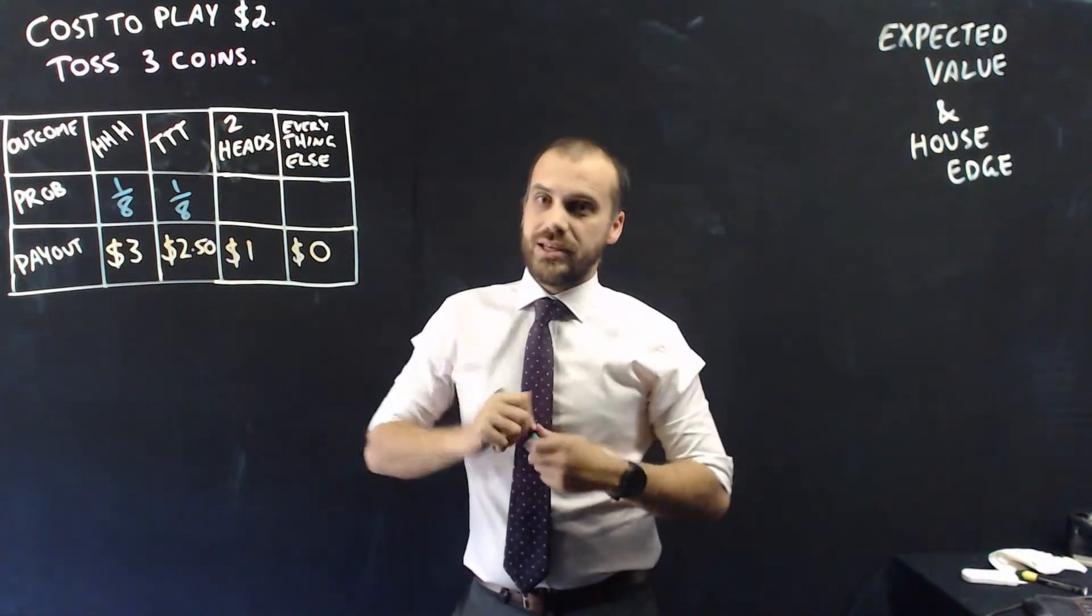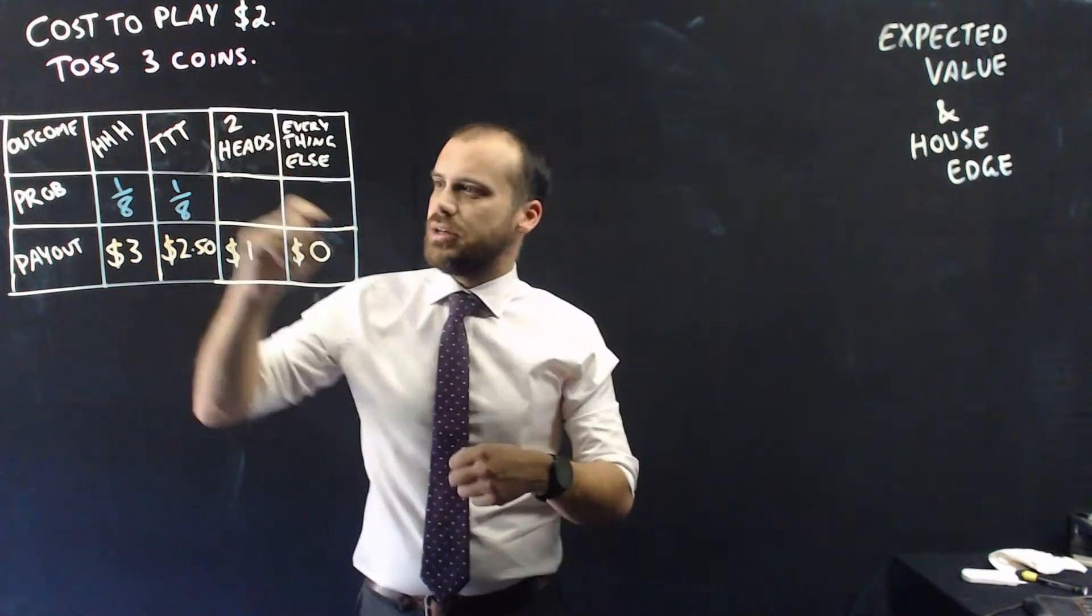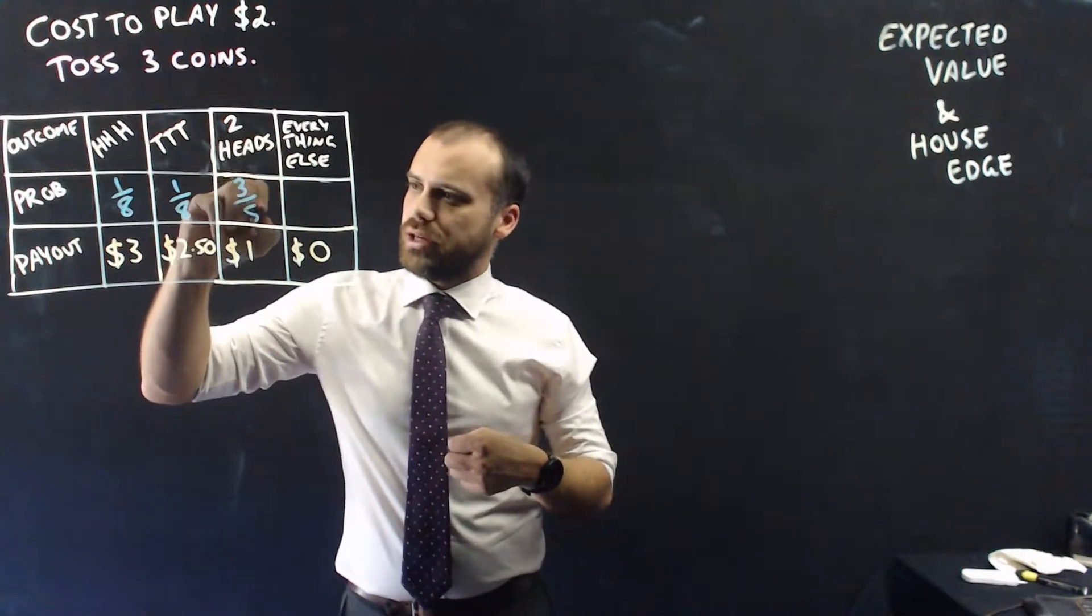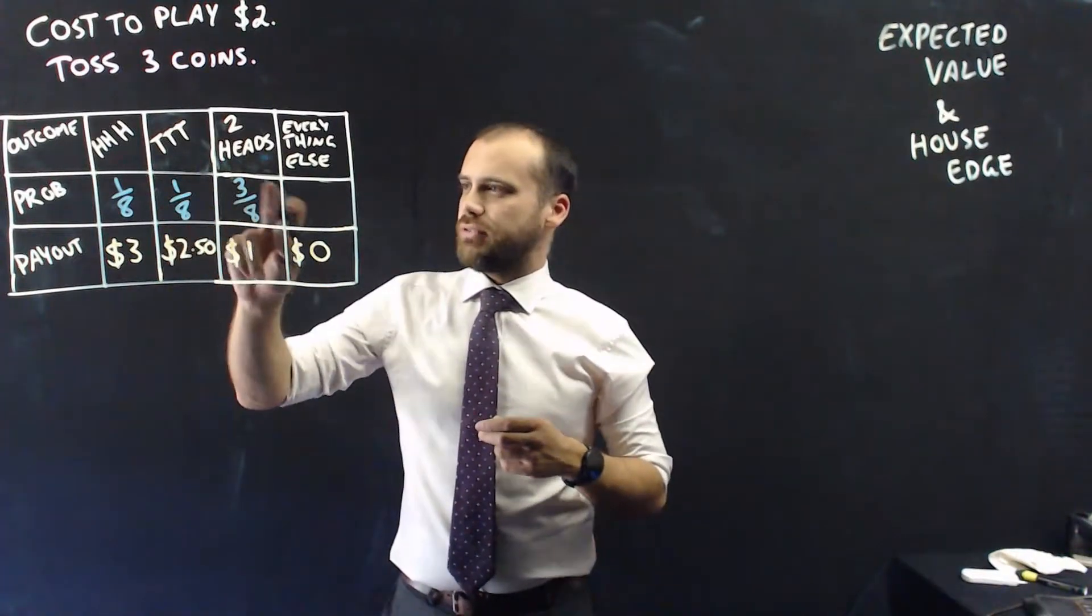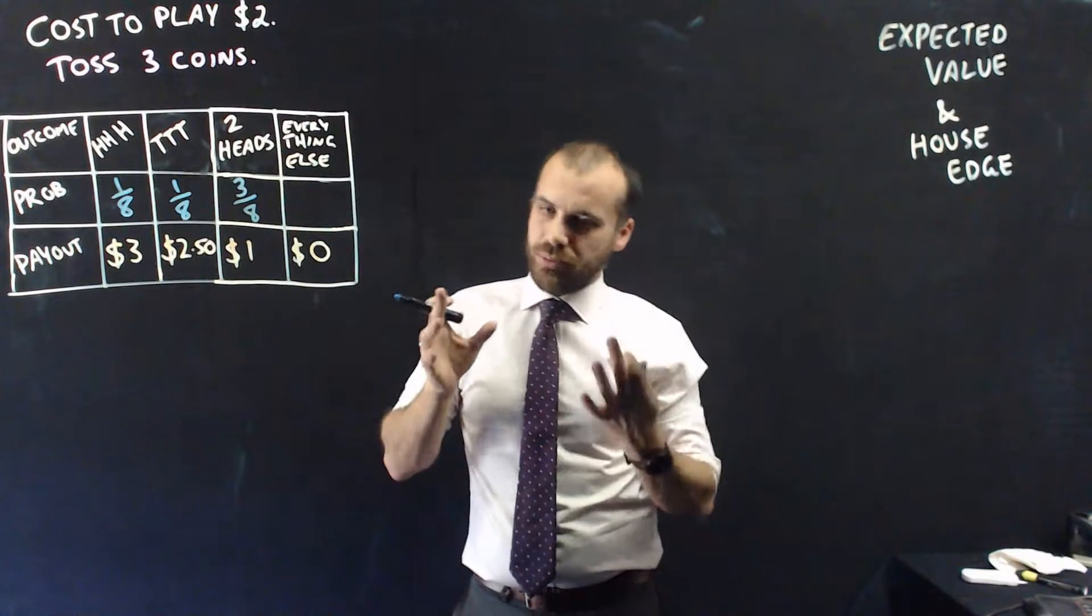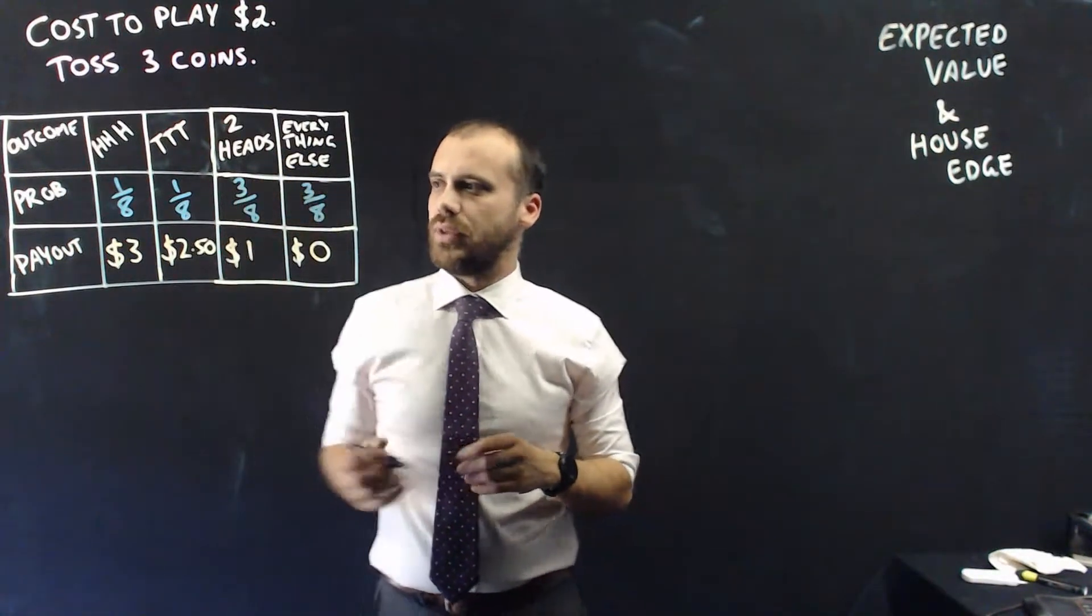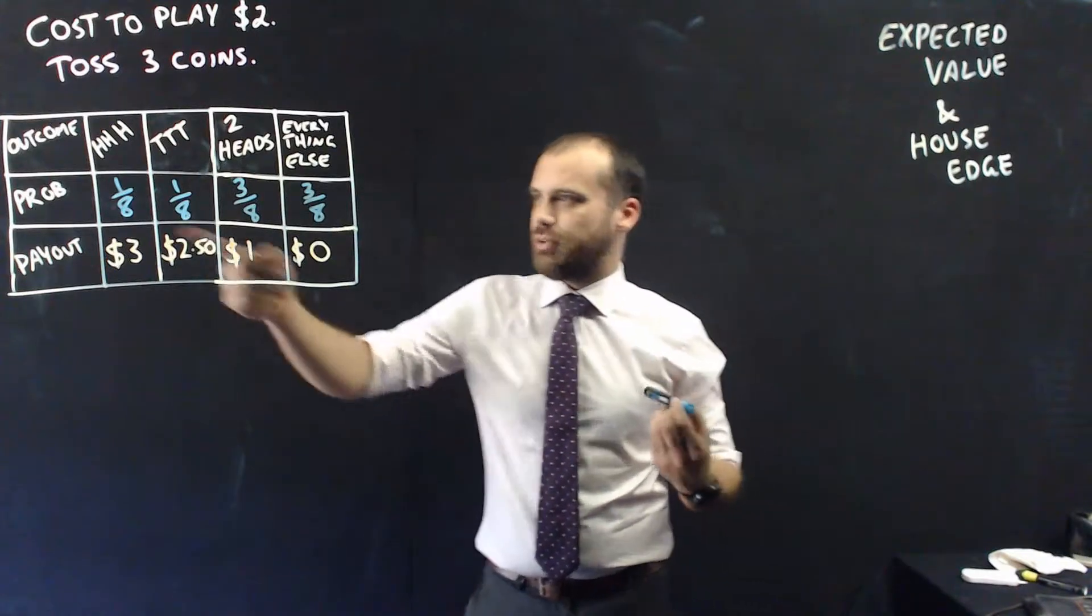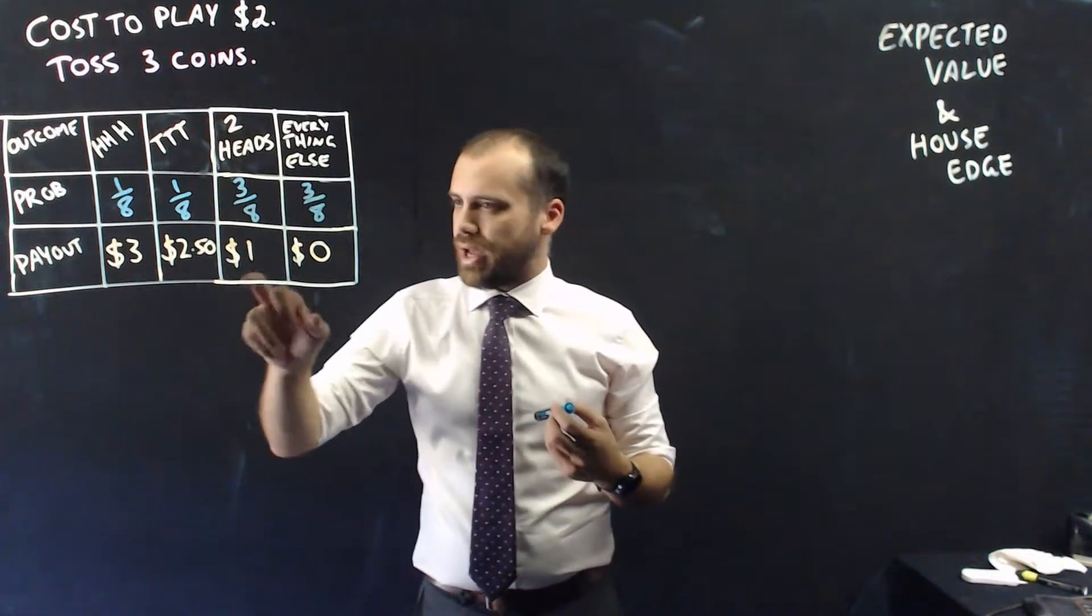Now, the probability of getting exactly two heads, I should use the word exactly there but I'm being a bit lazy, 3 in 8. And everything else, 1, 1, 3, that's 5, so the complement of 5 in 8 is 3 in 8. So there's the game in a nutshell. If I add up those probabilities, it's equal to 1, and these are the payouts you receive.